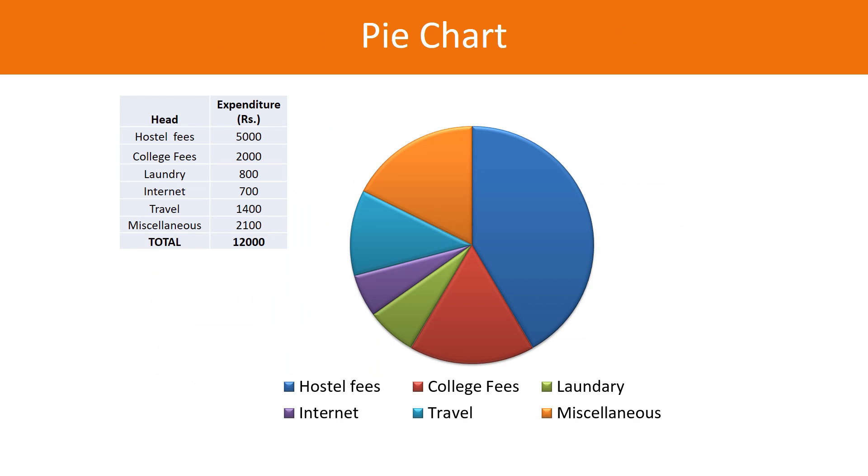Let us consider Meenakshi's monthly expenditure. She spends a total of about 12,000 rupees per month. This data is distributed across 360 degrees of the circle. For hostel fees of 5000 rupees: divide 5000 by 12,000 and multiply by 360. This value will be represented in the circle for hostel fees. Similarly, calculate for college fees, laundry, internet, etc.